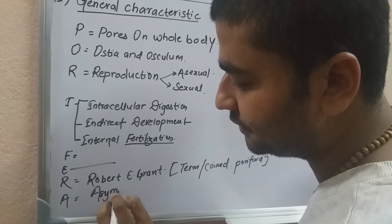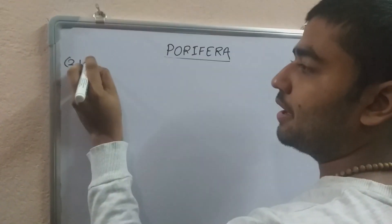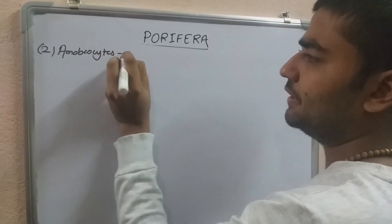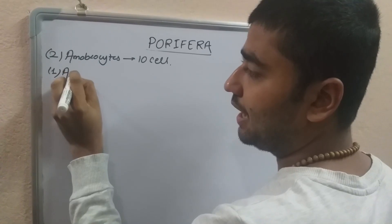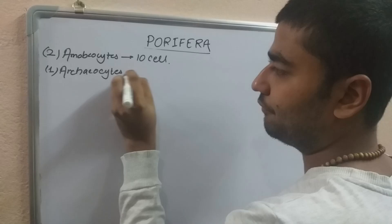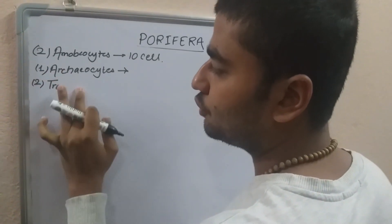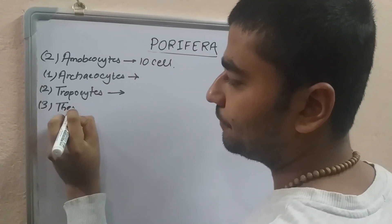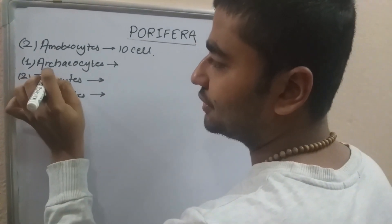Porifera shows asymmetry. Among the cell types, we have Archeocytes and Tropocytes (also called Thesocytes).